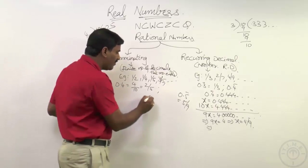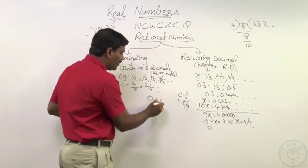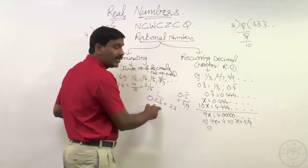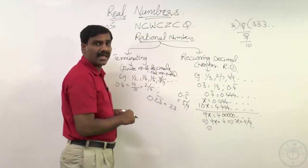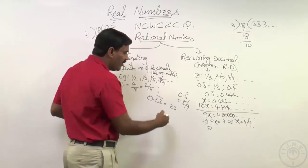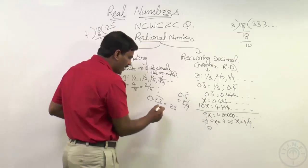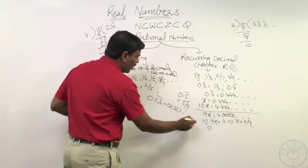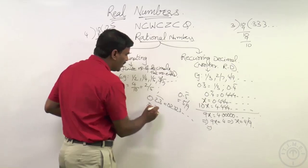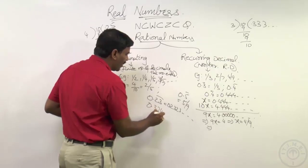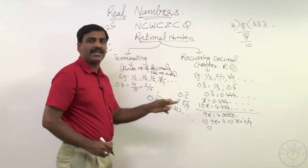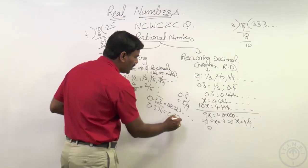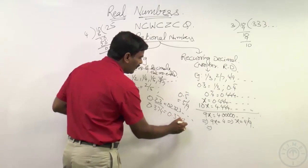The bar notation indicates the repeating part. If it is zero point two three bar, that means two three is repeating infinitely: zero point two three two three two three and so on. If it is zero point three seven four bar, that indicates three seven four is repeating continuously: zero point three seven four three seven four and so on.